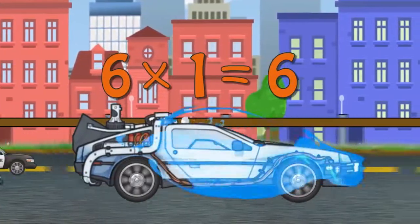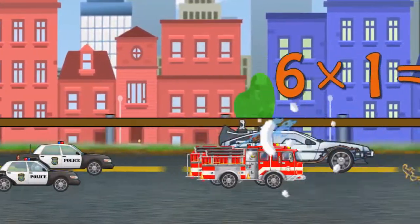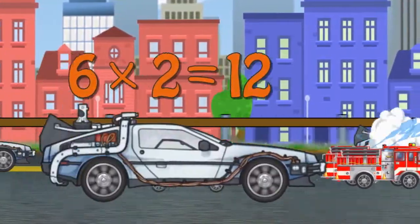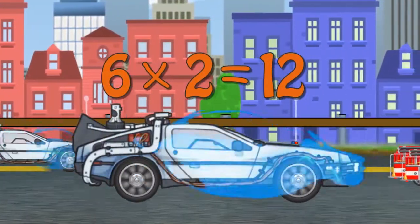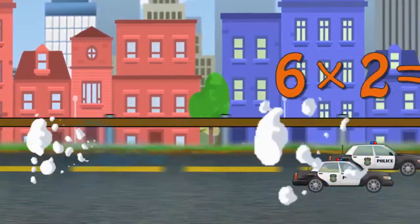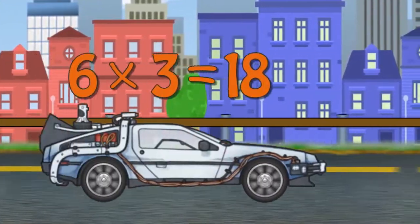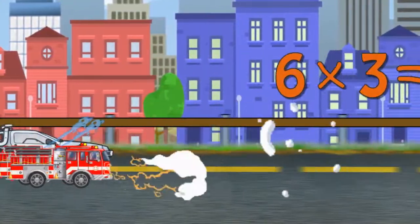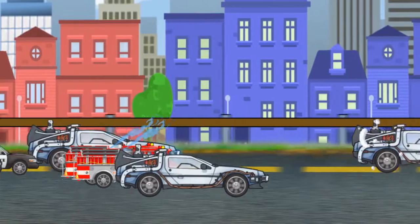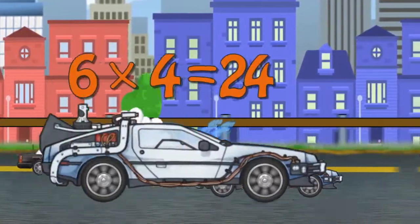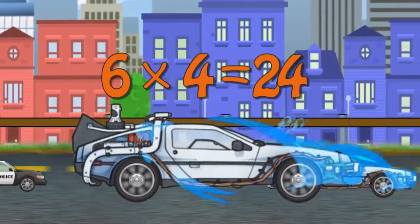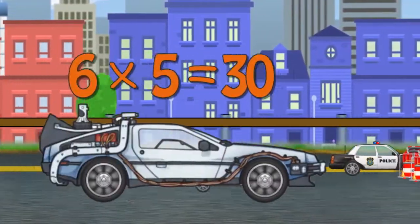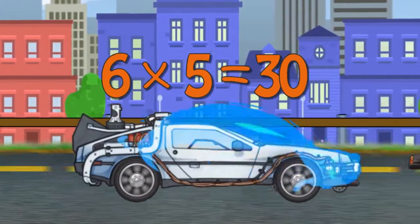Six times one is six. Six times two is twelve. Six times three is eighteen. Six times four is twenty-four. Six times five is thirty.